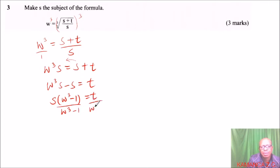This one goes, and we will be left with s equals t divided by w cubed minus one. So that is how you make s the subject of this formula.